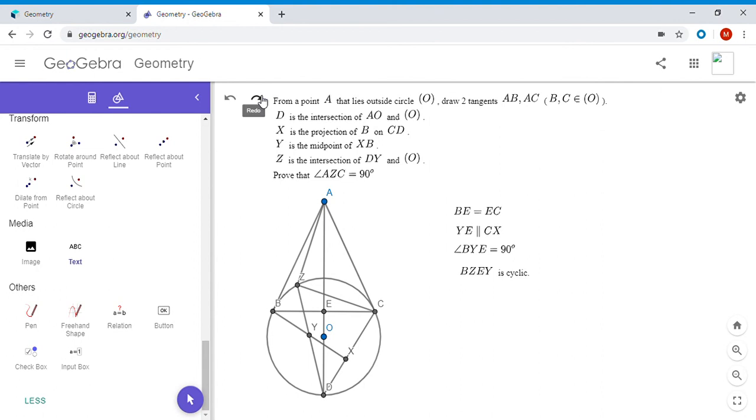So BZEY has to be cyclic. Now how do we get to that? So like I mentioned, it's kind of called Rhymes Theorem, so some people just know that. But the proof is an angle chase that is not super hard. So I will show it here.